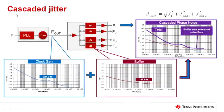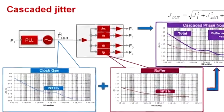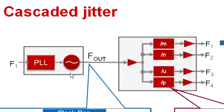Today we're going to talk about how to properly measure the residual noise of a clock fan-out buffer. This is important because choosing the wrong fan-out buffer can degrade system performance in high-precision applications. This diagram illustrates a typical application where we have a clock source driving a fan-out buffer, and the output of the fan-out buffer is driving various devices such as data converters and FPGAs.